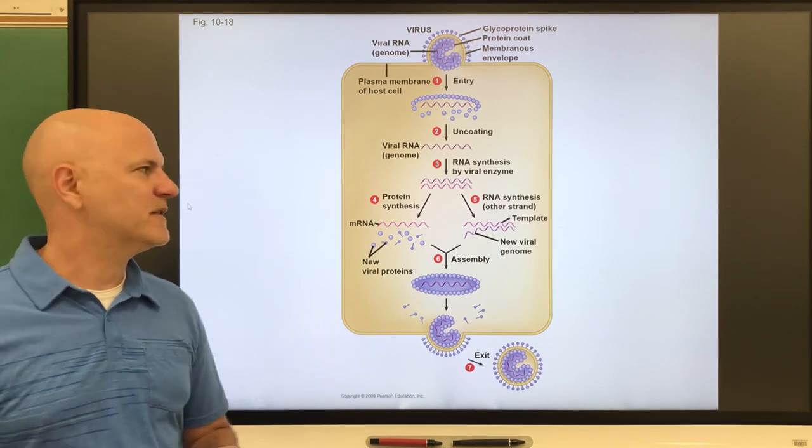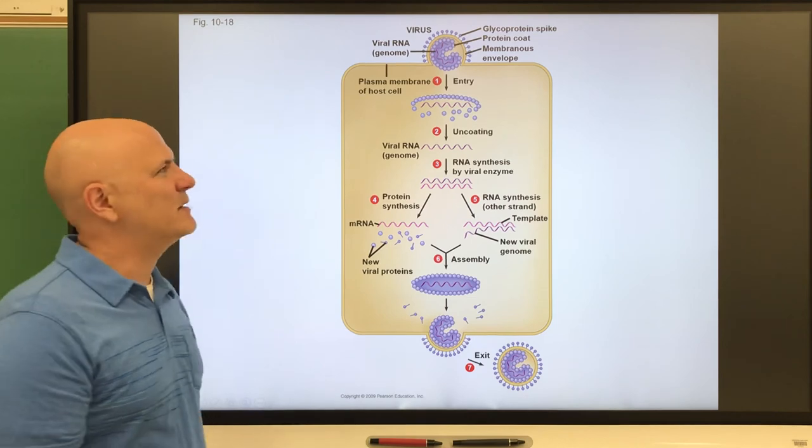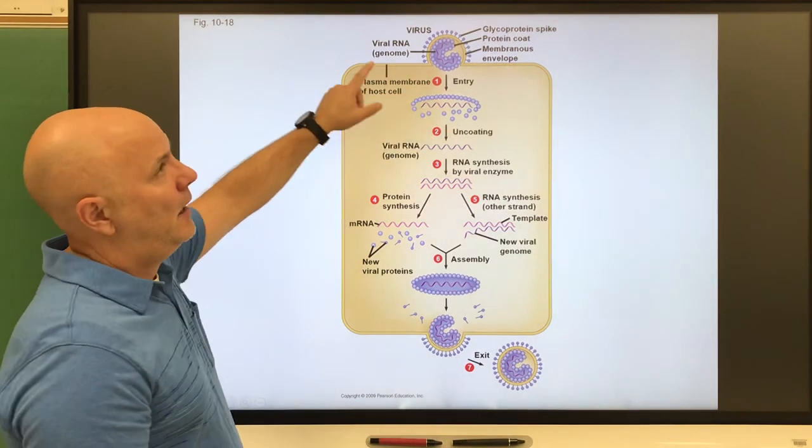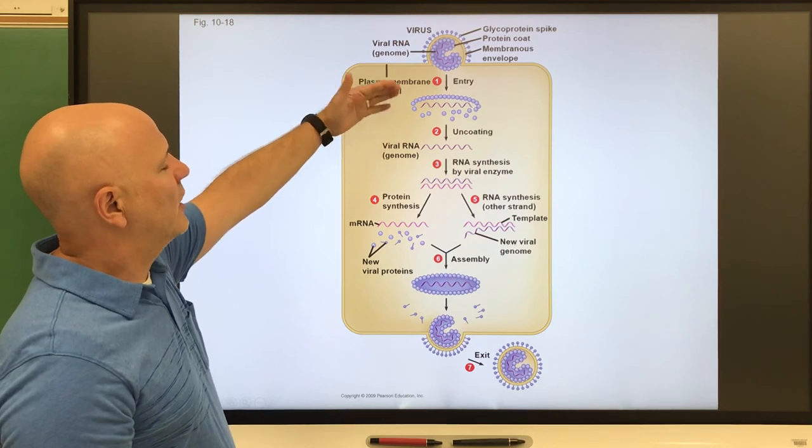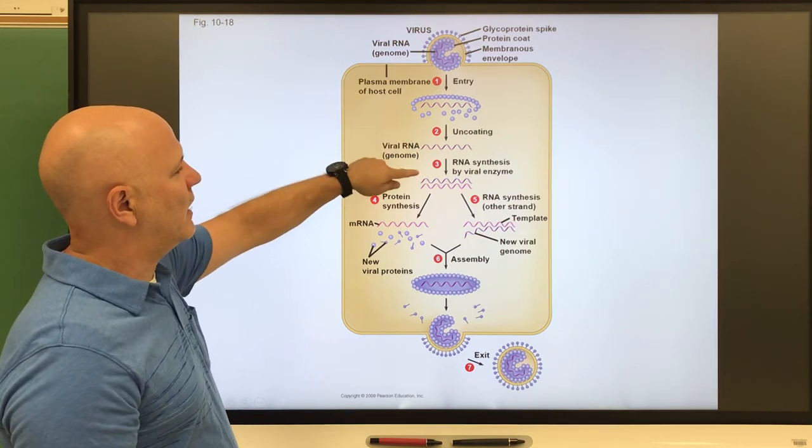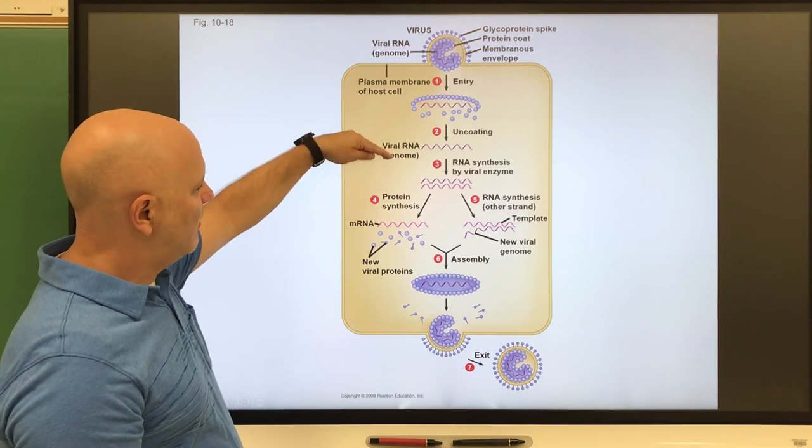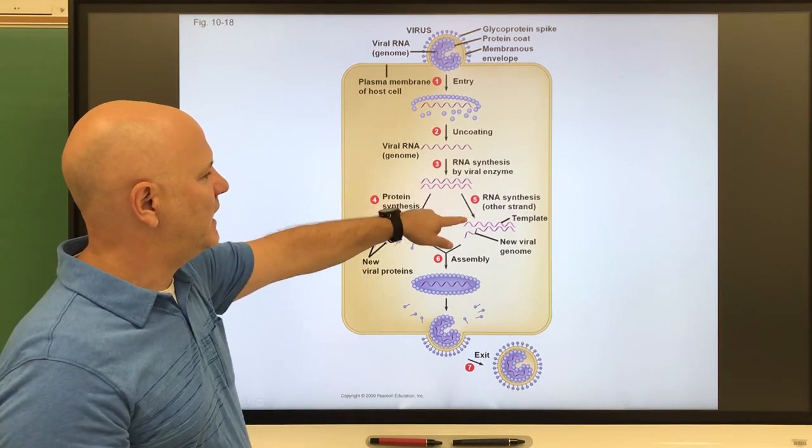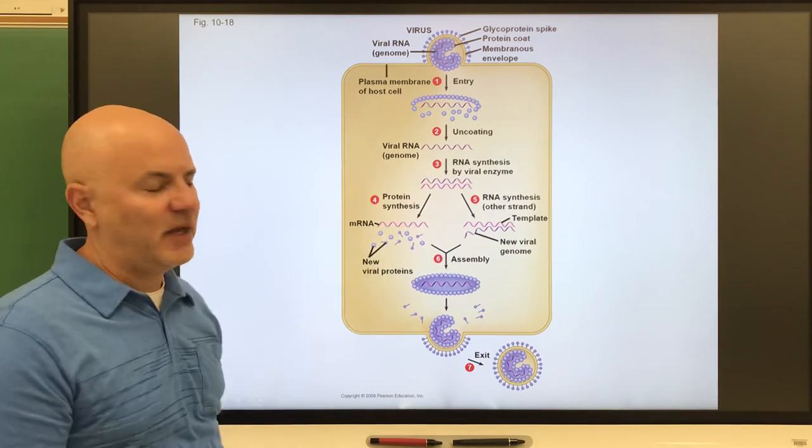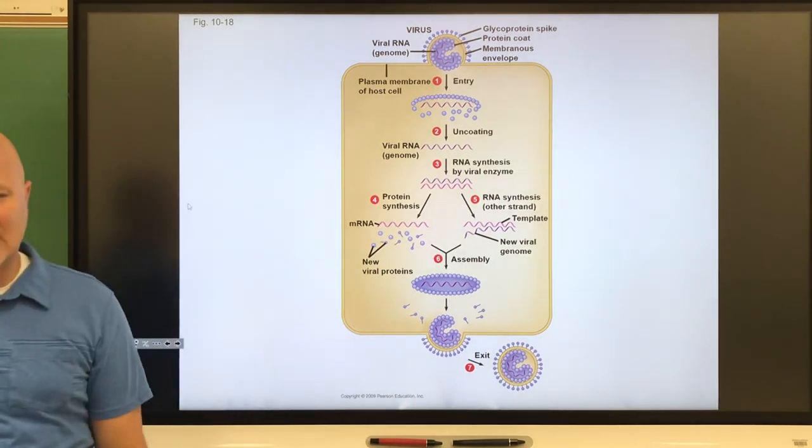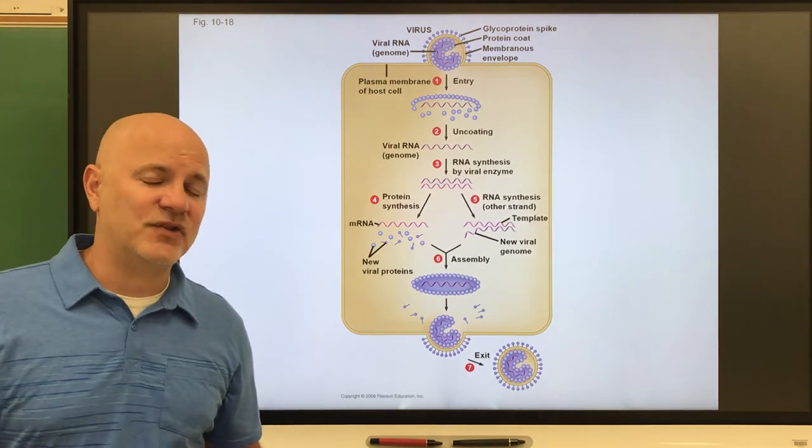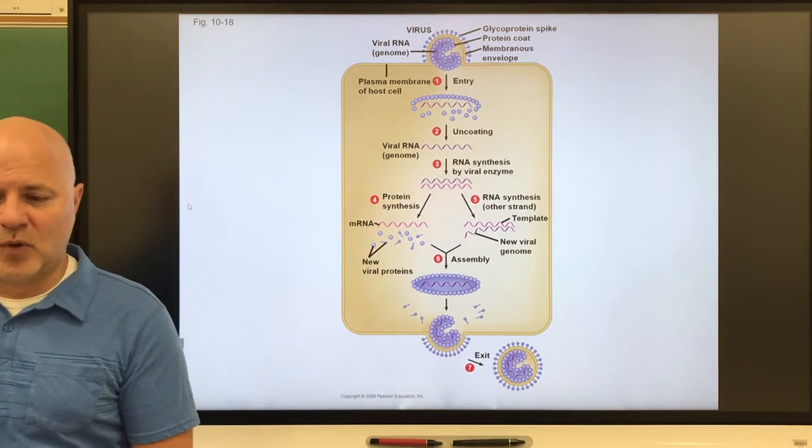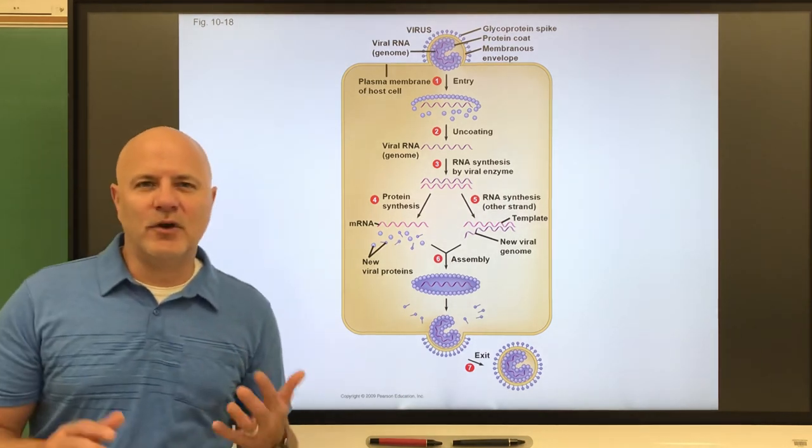It is what we call a retrovirus. If we look at its viral replication, it uses RNA as opposed to DNA. Once it gets into the cell, it causes RNA to make DNA, and then from that DNA we make RNA, and then it makes more viruses. It has this extra step in there, and one of the problems with that extra step is that it can mutate more readily.